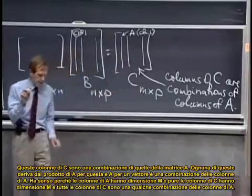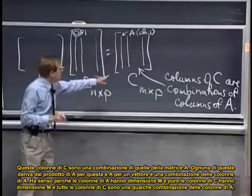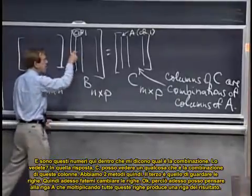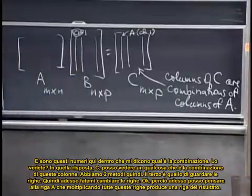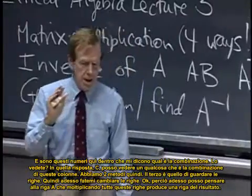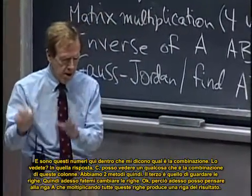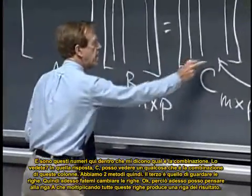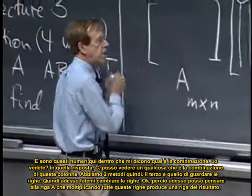Every column of C is some combination of the columns of A, and it's these numbers in here that tell me what combination it is. Do you see that? In that answer C, I'm seeing stuff that's combinations of these columns.